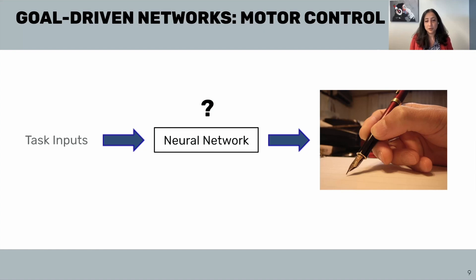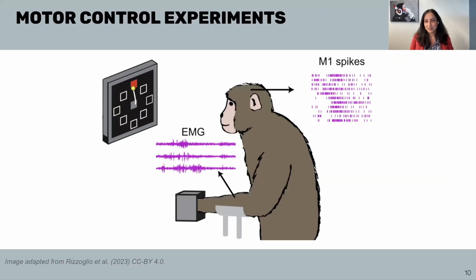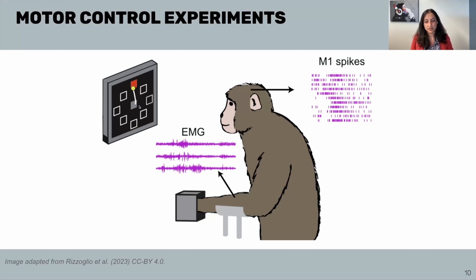For motor control, what are the corresponding inputs and outputs and the right form of the neural network? What do experimentalists record, and what are the kinds of tasks? Here I'm showing a typical monkey reaching experiment. Experimentalists record from M1 or motor cortex neurons, as well as EMG or muscle activity, while the task is being performed. In this case, it's a reaching experiment where the monkey is reaching towards different targets on a screen. So what should the inputs and outputs of our goal-driven network be?